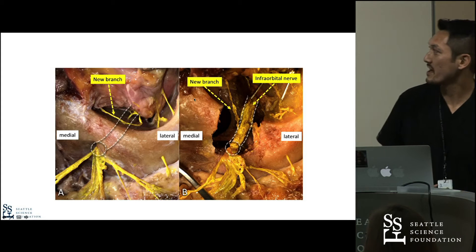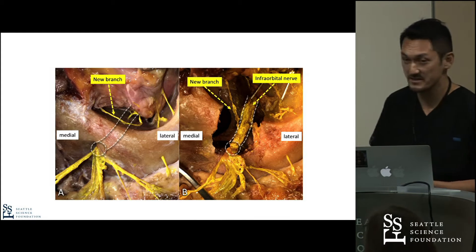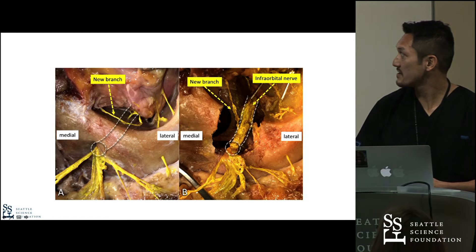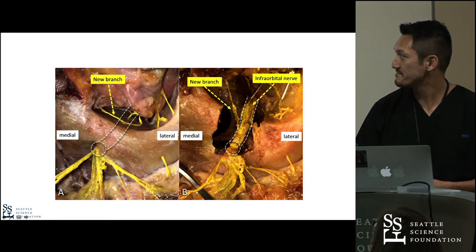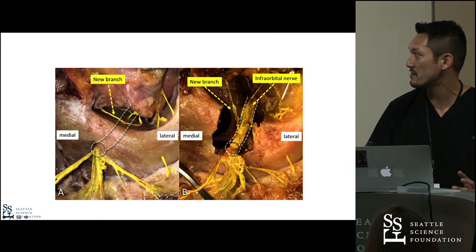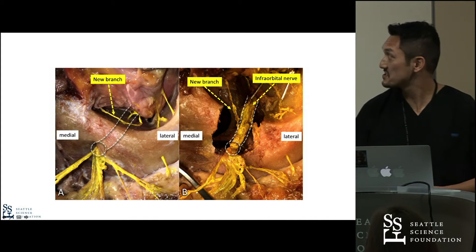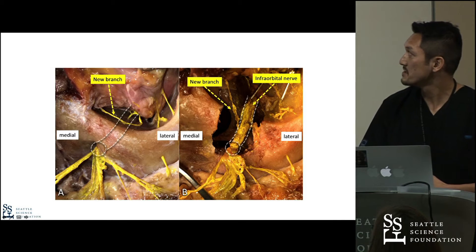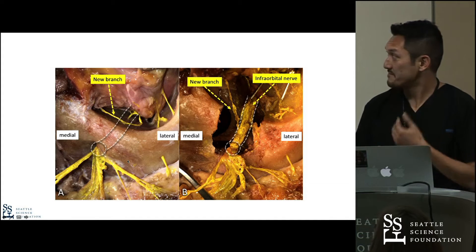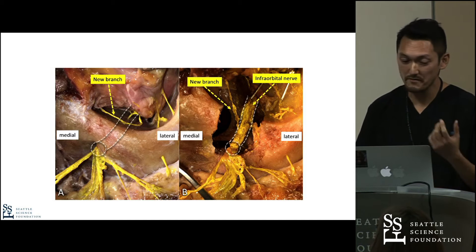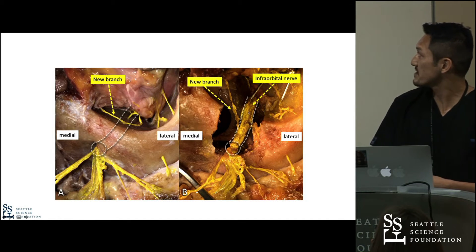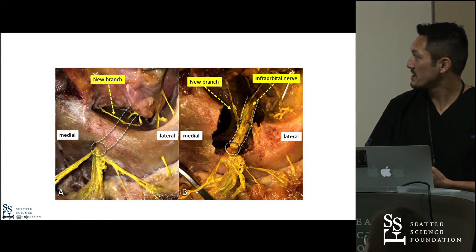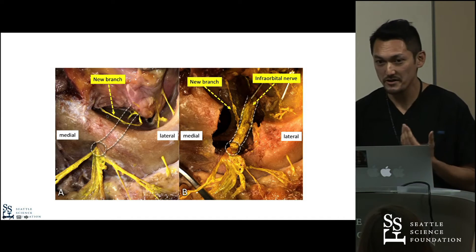This is a little bit complicated. A and B show the same cadaver — this is a dissection picture. This is the medial side, this is the lateral side, and this is the orbit. The dotted line shows the infraorbital canal, and the yellow structures are the infraorbital nerve. This shows some of the inferior palpebral branch, superior labial branch, and external and internal nasal branch. We found a small branch arising from the upper wall of the infraorbital canal, which has never been described before. We name this nerve the posterior inferior palpebral branch.